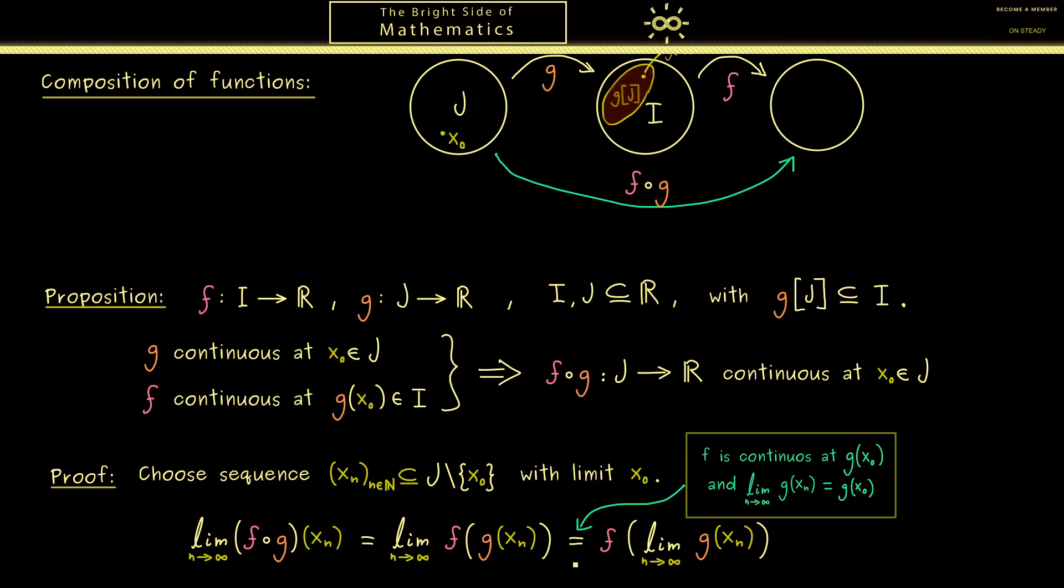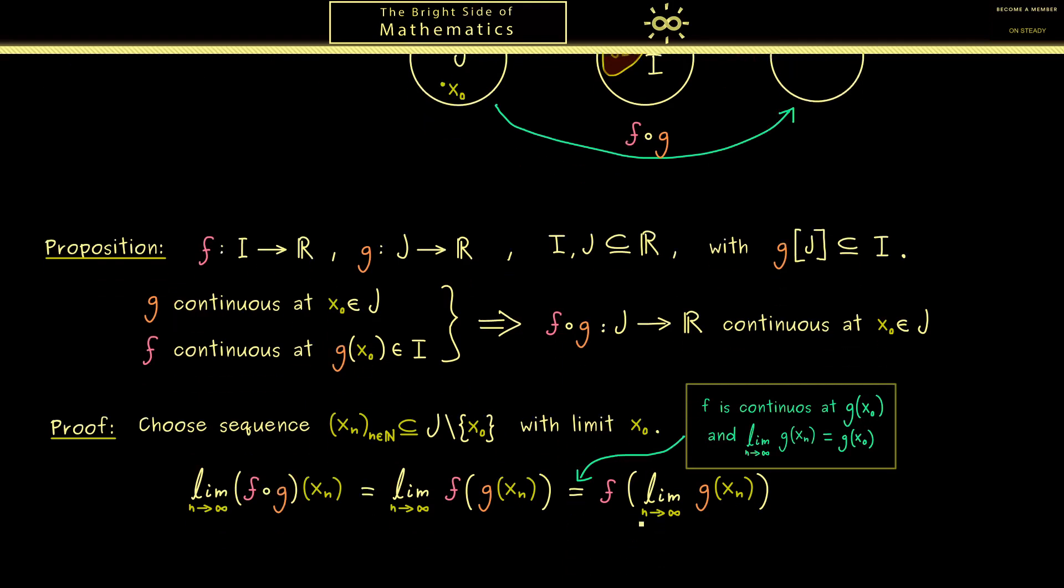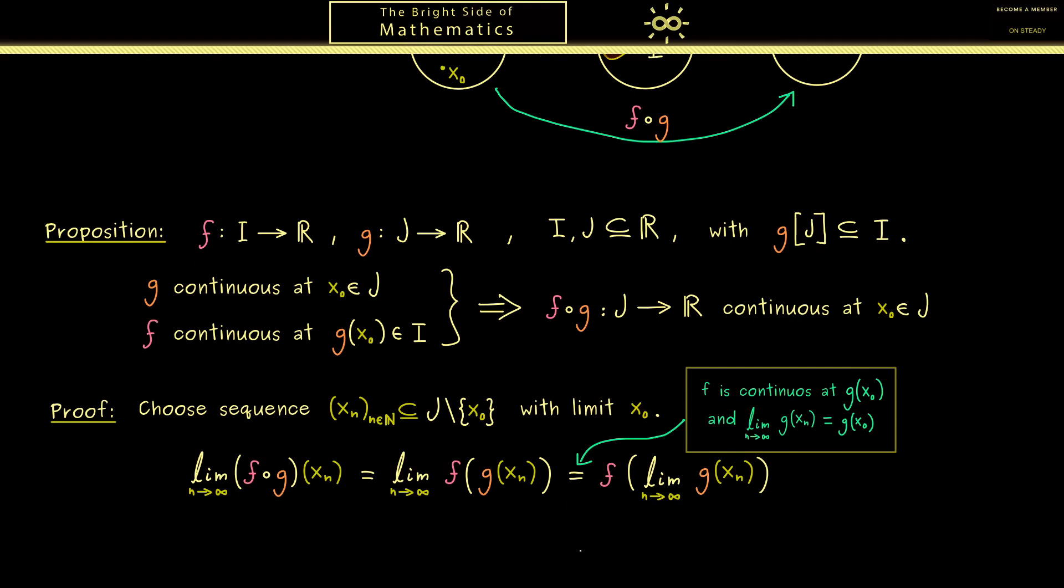And now we use the continuity of f which means we can pull in the limit. Of course we only know that f is continuous at g of x0 but this is exactly the point we put in here. This is immediately given because g is continuous at x0 so we can pull in the limit here as well.